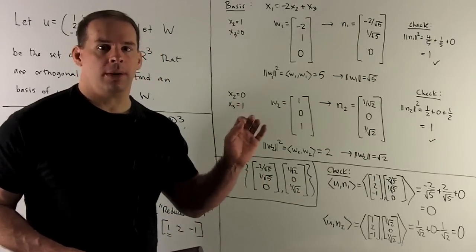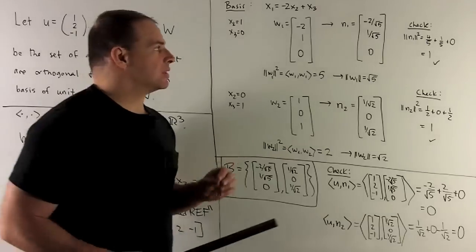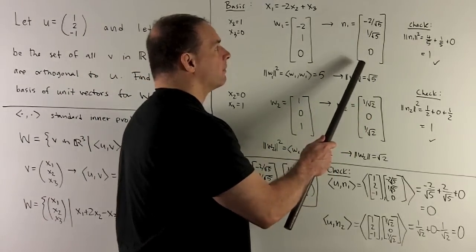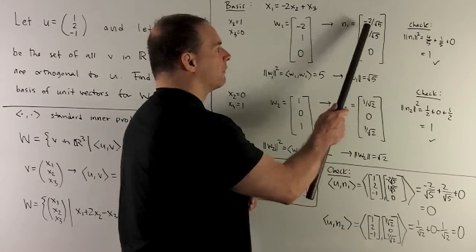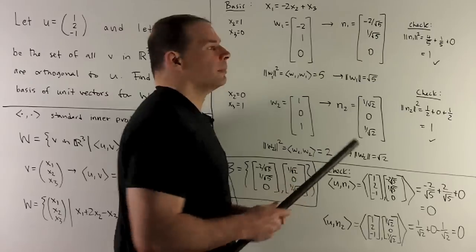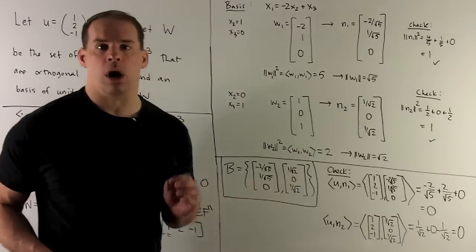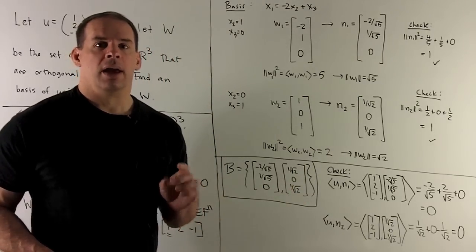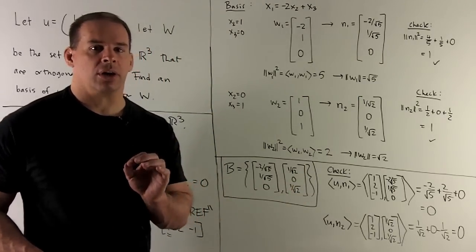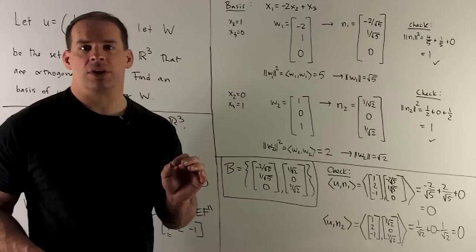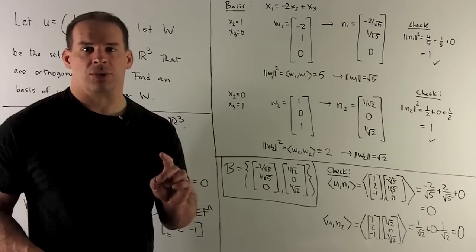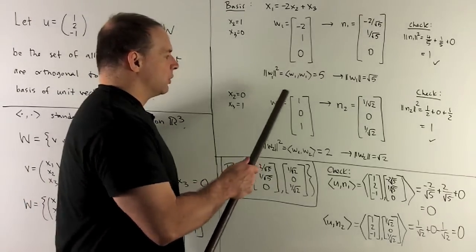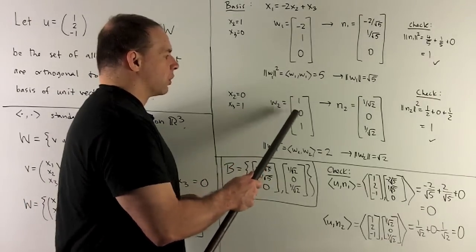Checking the length of N1: taking the inner product of N1 with itself gives 4/5 + 1/5 + 0 = 1. For our second vector, we let X2 = 0 and X3 = 1, giving W2 = (1, 0, 1).